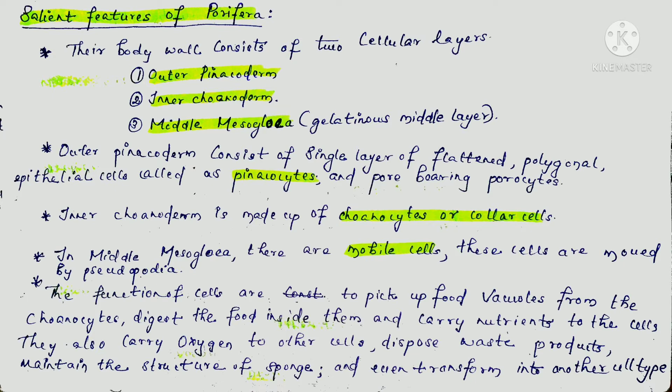There are also mobile cells called archaeocytes, which move by pseudopodia. The functions of archaeocytes are to pick up food vacuoles from the choanocytes, digest food inside them, carry nutrients and oxygen to other cells, dispose of waste products, maintain the structure of sponges, and even transform into other cell types.